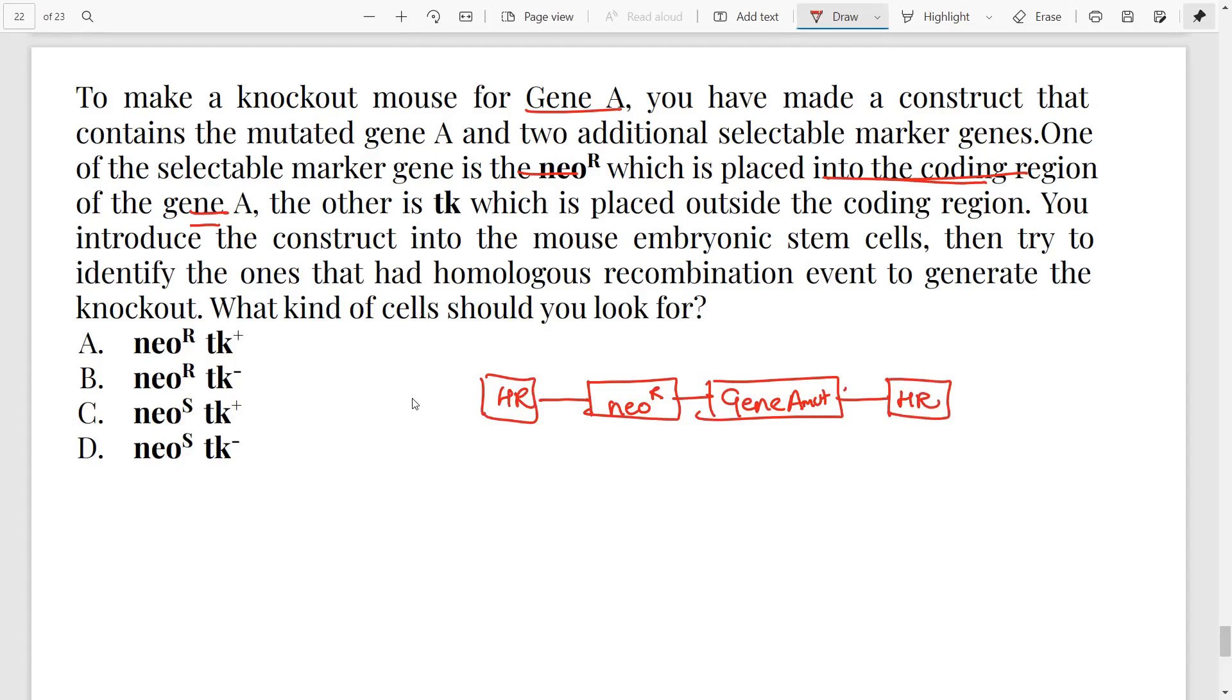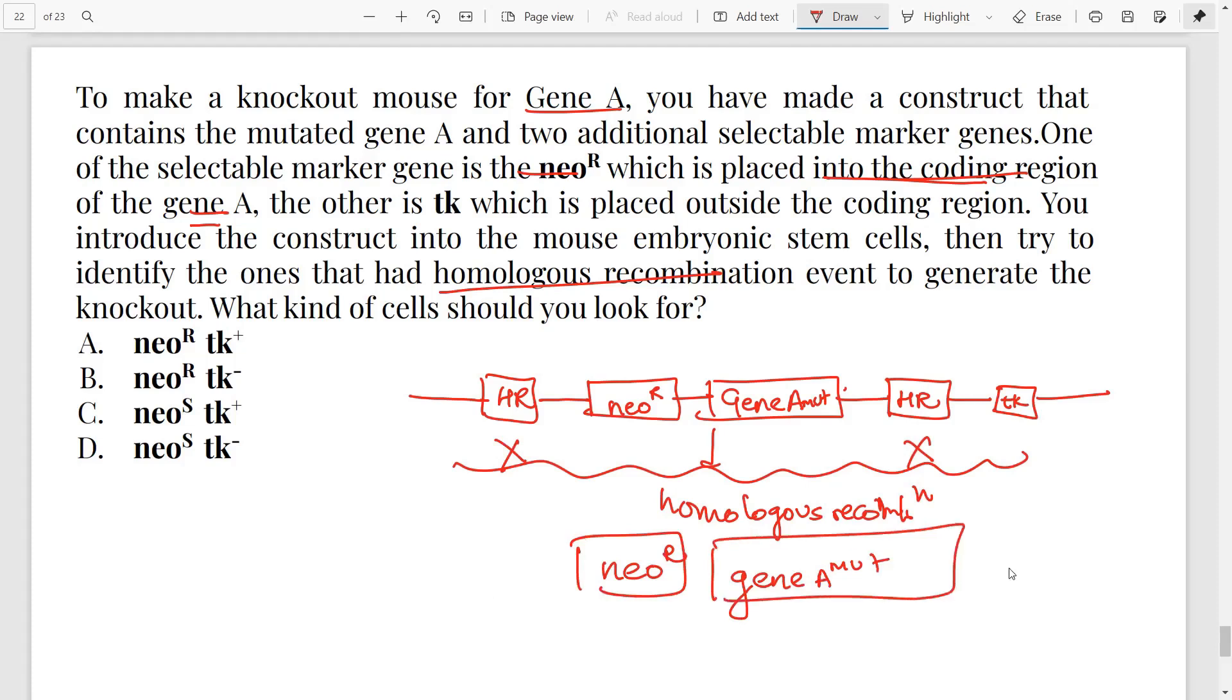And the other TK is placed outside. So outside this you'll have the TK. This is the construct. You introduce the construct into the embryonic cell and try to identify cells that have the homologous recombination. So we have to identify. Now, what kind of cell should we be looking for? See, if you want homologous recombination, that means how is it going to occur? There will be homologous recombination at these regions. That means your cells should have the gene A mutated copy and the neomycin resistance, but not the TK. So this should happen.